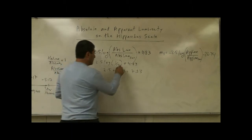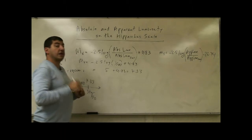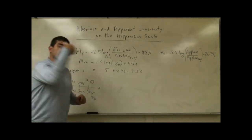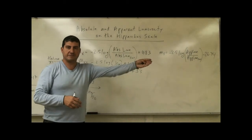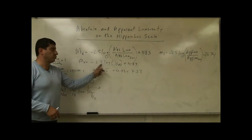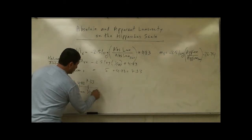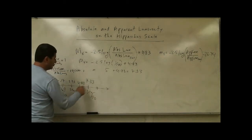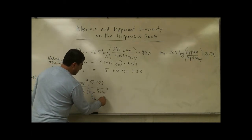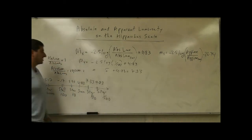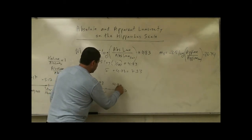For a star 100 times dimmer, you go 5 units to the right and get a positive 9.83. Every 100 times dimmer corresponds to 5 more units to the right — just as every 100 times brighter is 5 units to the left. So at 9.83, you have a star that is one-hundredth the brightness of the sun.